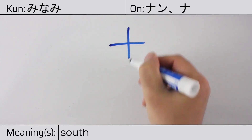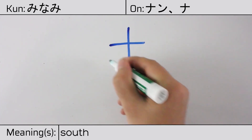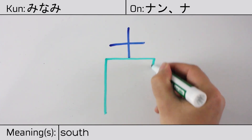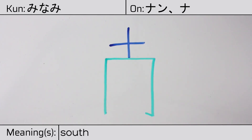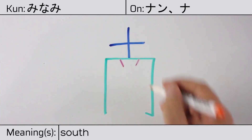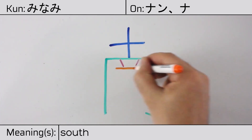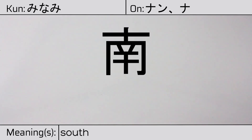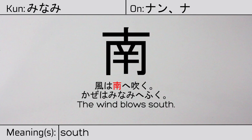You can remember this kanji by the following hint: known for its fertile soil, where sprouting seeds used many bags. Our example sentence is: Kaze wa minami e fuku — The wind blows south.